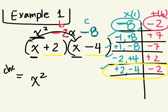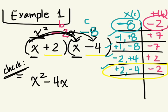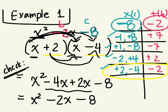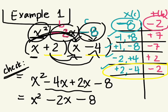You can check — let's verify this actually works. We already did X times X. What's X times negative 4? Negative 4X. What's positive 2 times X? 2X. What's positive 2 times negative 4? Negative 8. Can we simplify? Negative 4X plus 2X is negative 2X, and negative 8. Same answer. Two things that multiply to give us negative 8 and add up to negative 2 — those are the factors.